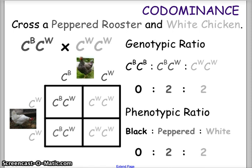For another example we cross a peppered rooster with a white chicken. For the peppered rooster we segregate C^B over the first column and C^W over the second column. The white chicken provides C^W on both rows. Two offspring come out peppered and two come out white. Our genotypic ratio is 0 to 2 to 2, and our phenotypic ratio of black to peppered to white comes out 0 to 2 to 2.